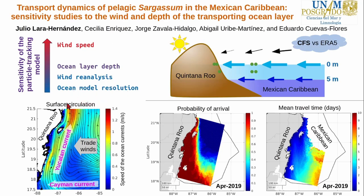We also estimated the transport dynamics of the sargassum in the Mexican Caribbean, which is dominated by the northward Yucatan current and the easterly trade winds.